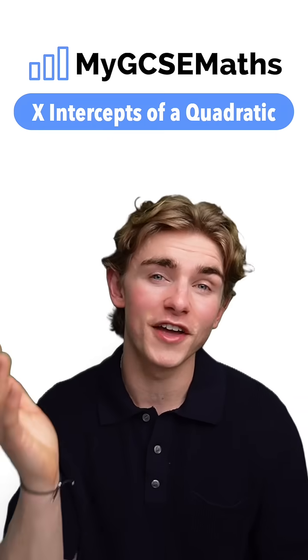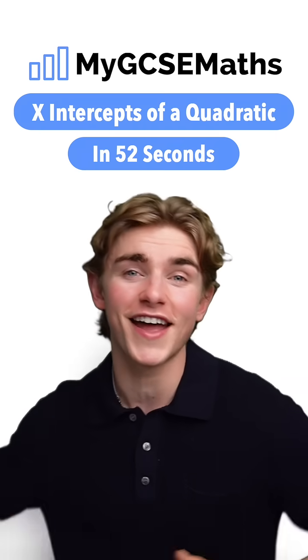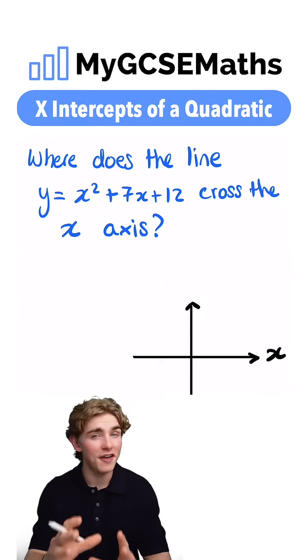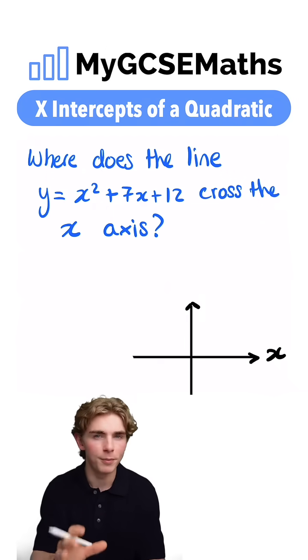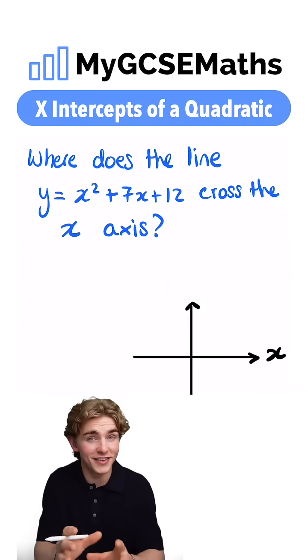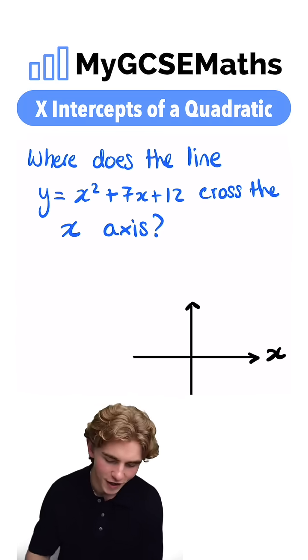GCSE maths x-intercepts of a quadratic graph in 52 seconds. Let's go. The wording of this question would definitely trip a lot of students up, but pay close attention because this does come up a lot. Let's have a look.